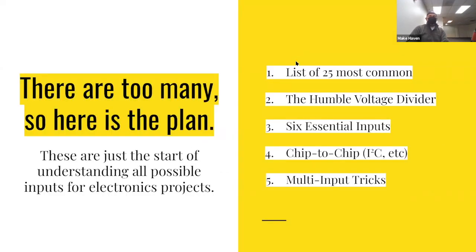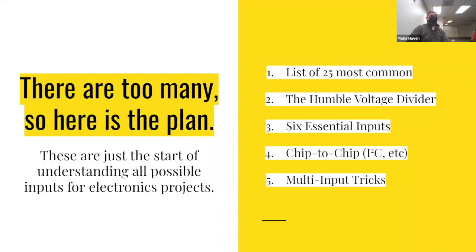We've talked a lot about coding so far, had a couple weeks of that, then did our bio week, and now we're going through all the different types of inputs. We'll list out the 25 most common inputs — there are tons of options for getting information from the world into electronic systems. We'll focus on six essential inputs you should know exist, and then discuss chip-to-chip communication and multi-input tricks.